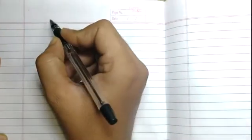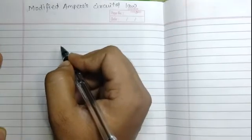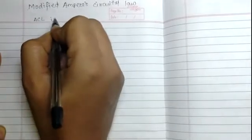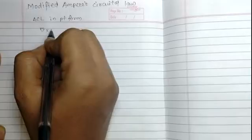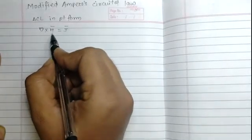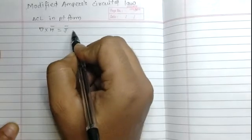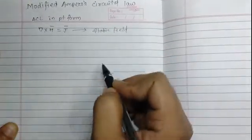Hello friends, the next topic we will see is the Modified Ampere's Circuital Law. In the previous lecture we had seen Ampere's Circuital Law in the point form, which is given by curl of magnetic field intensity equals to current density vector — that is del cross H equals to J. But this equation is applicable only for static fields.